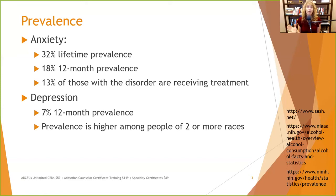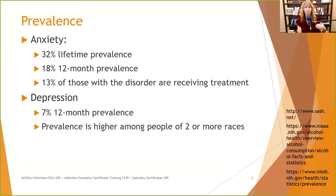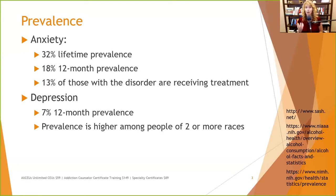Depression has a lower prevalence, and we're really looking at just major depressive disorder — not persistent depression, what used to be called dysthymia in the DSM-IV. That's 7%, so still a relatively high number. That means one out of every 13 people experiences a depressive episode in a 12-month period. We're not talking just the blues — we're talking clinically diagnosable major depressive disorder. The prevalence is significantly higher among people of two or more races.